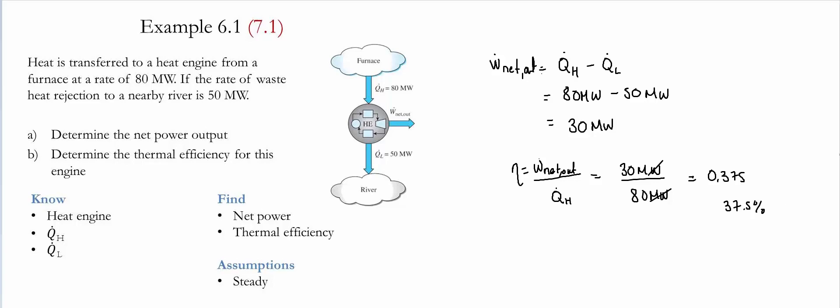This value means that only 37.5% of the heat transfer from the furnace into the heat engine was converted into useful net power output.